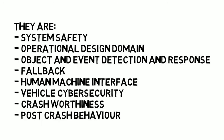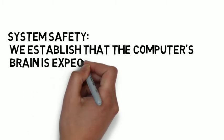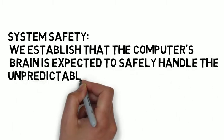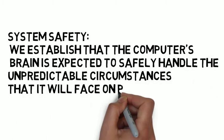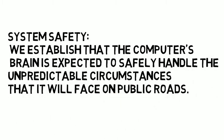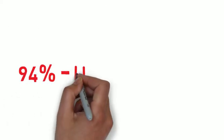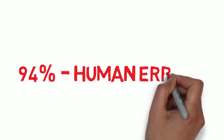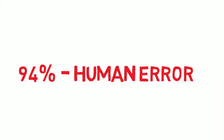In system safety, we expect the computer's brain to safely handle unpredictable conditions. Survey reports claim that 94% of accidents occur due to human error. This could be reduced if self-driving cars become fully automated.